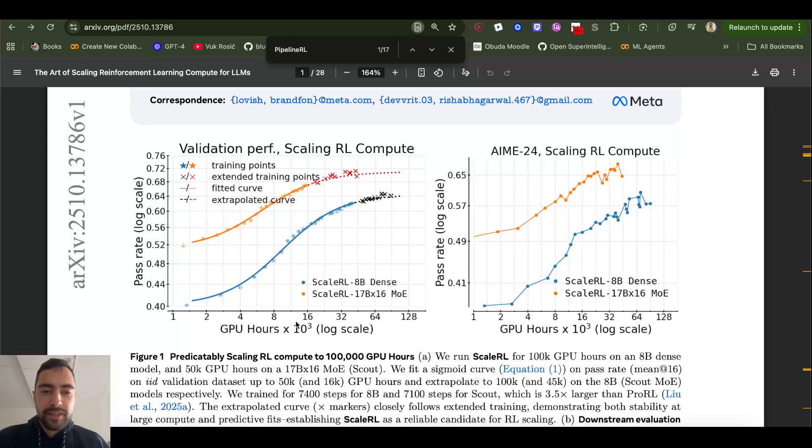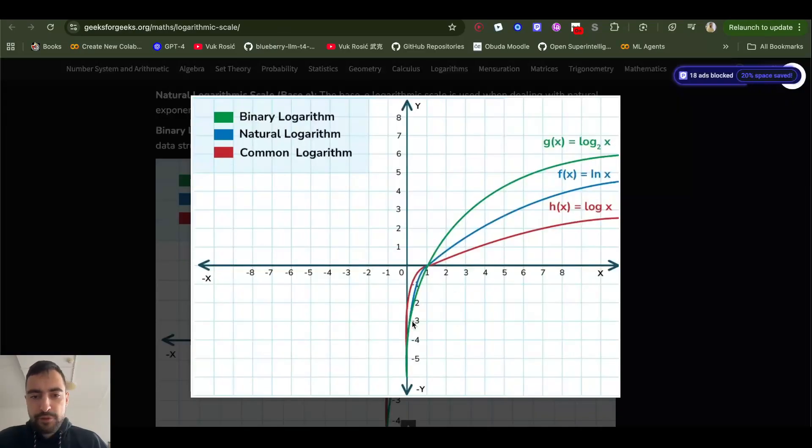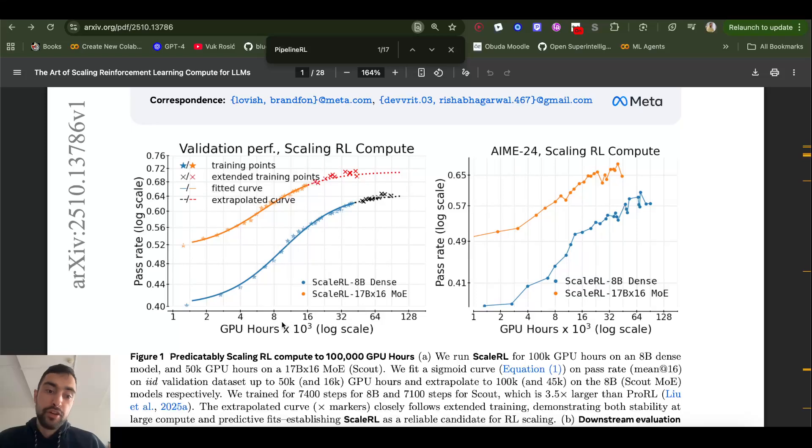What logarithmic scale here means is that this is actually 1,000, 2,000, 4,000, 8,000, 16,000. If you draw this on a linear scale, it would be like this. In the beginning, you get very fast improvements and eventually start to slowly drop off. So this is in reality very fast in the beginning and eventually dropping off and plateauing. But they draw logarithmic scale because in reality, some companies have like 10 times more compute than the next 10 times. So compute is actually scaling logarithmically or in this way in reality.